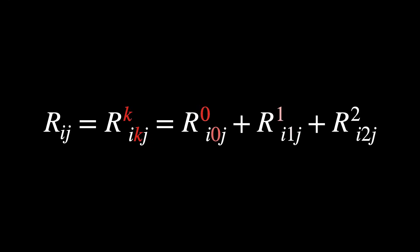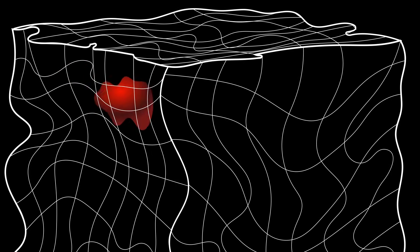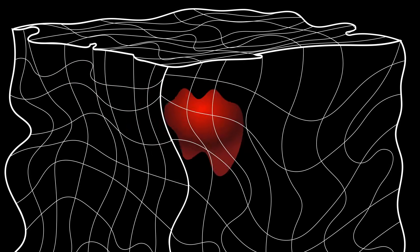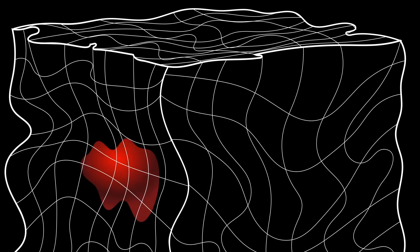Ricci Curvature is defined as the contraction of the Riemann Curvature tensor. We'll see very clearly what it means and what it looks like in a general space. But for now, think of it as a way of measuring how areas, volumes, or hypervolumes in higher dimensions expand or shrink as you move outward from a point.